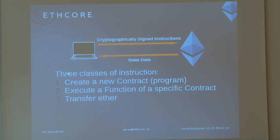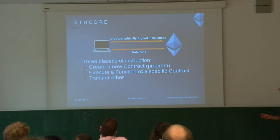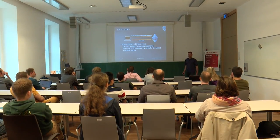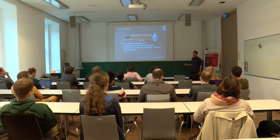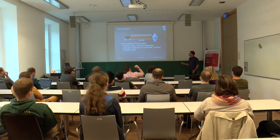There are three types of instructions you can give the Ethereum world computer: you can create a new contract with its own program code; you can ask for an existing contract to be executed, providing a certain amount of money or particular data; or you can just transfer ether to someone. You can do combinations — create a new contract with some ether in its holdings at the start, or execute a function and transfer ether using that.